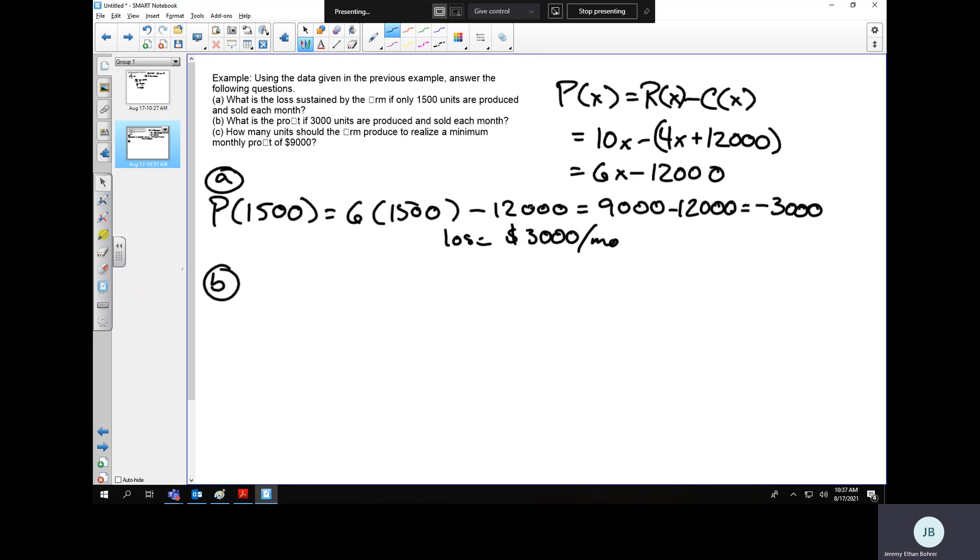B asks, what's the profit if 3000 units are produced and sold each month? Okay, well then we take P of 3000. That's 6 times 3000 minus 12,000, which is 18,000 minus 12,000, which is 6,000.